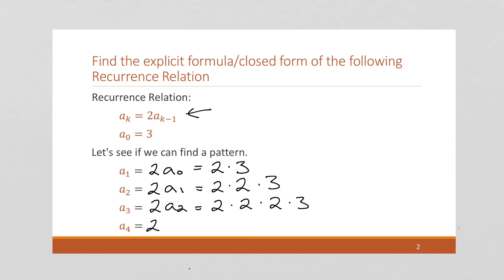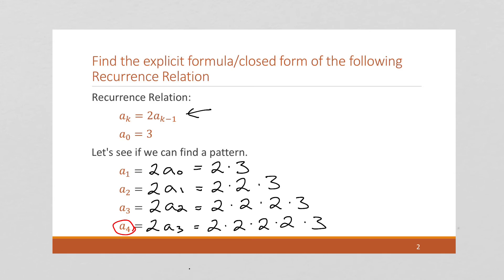And here we've got a sub 4 — excuse me — which is 2 times a sub 3, and that's going to be 2 times 2 times 2 times 2 times 2 times 3. At this point, after we've done a couple of iterations, we want to notice that when the subscript is 4, we have four 2s, and that's what allows us to come up with our pattern.